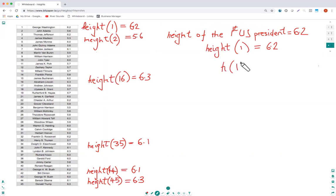Now remember this h is not as important as the one inside and the 6.2. This is the number of your president and this is his height. In other words, you can write h of 35, the 35th president, is equal to 6.1.